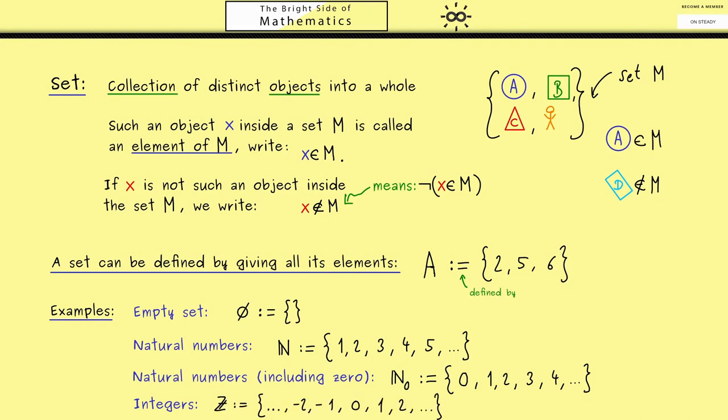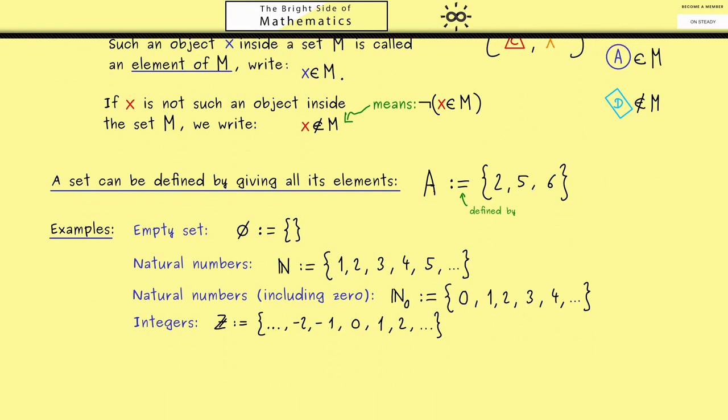In later videos we will properly define these sets but for the moment it is a good thing that we have the number sets such that we can write down some examples. Therefore I assume that you already know at least some things about natural numbers. Now later when we are ready for it we can also define the rational numbers denoted by ℚ, the real numbers denoted by ℝ and the complex numbers denoted by ℂ.